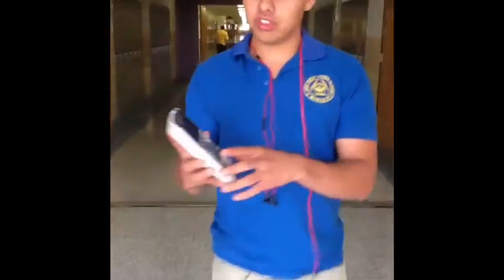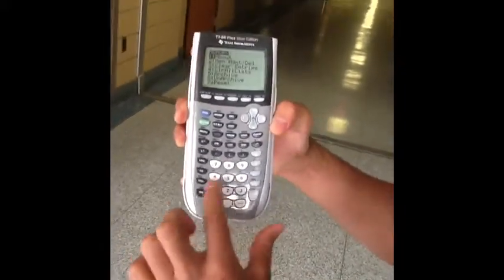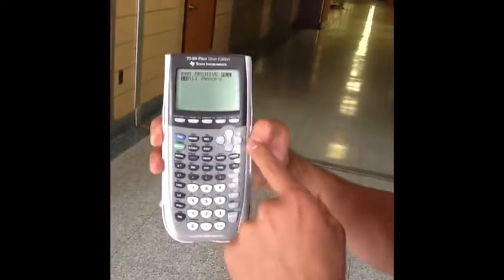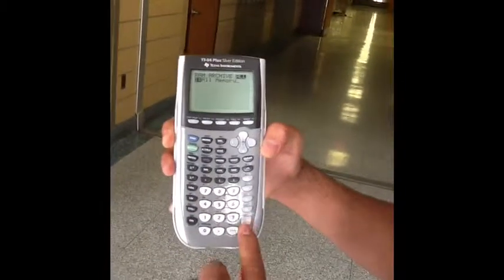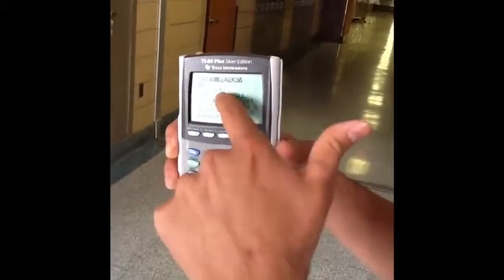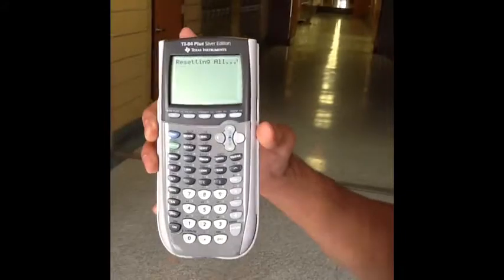To clear our list on the calculator we need to push second, mode, plus, seven. Then you hit one two times over here and then you press enter. Then you hit two over here which says reset and then the calculator starts to reset and then we are ready to find the median and mode using the calculator.